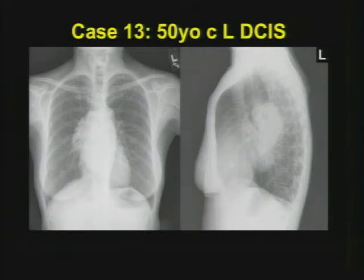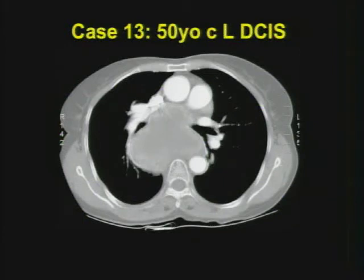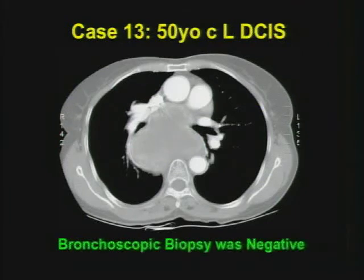Case thirteen: the history as provided — this was a patient getting a preoperative chest X-ray because of a diagnosis of DCIS, with an ultrasound-guided core. With a CT scan that looks like this, how might you obtain a tissue diagnosis? For those thinking as I would — is there any way someone else could get this diagnosis? The bronchoscopic biopsy was negative.